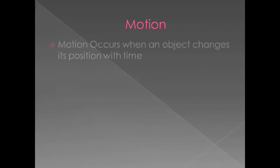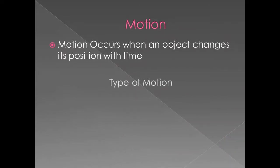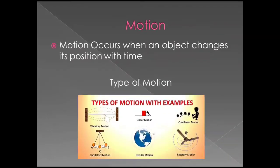Motion. Motion occurs when an object changes its position with time. It can be vibratory, linear, curvilinear, oscillatory, circular and rotatory motion.